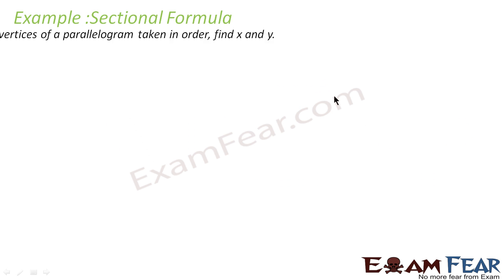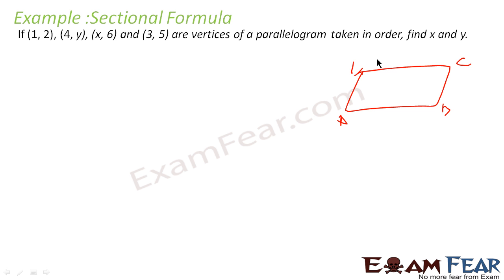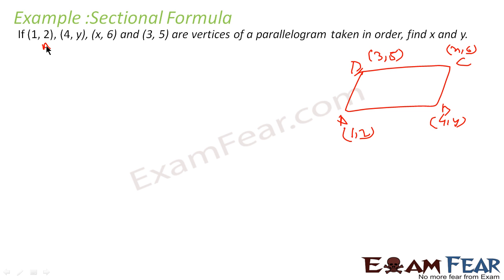For example, the question says: if (1,2), (4,y), (x,6), and (3,5) are vertices of a parallelogram taken in order, we have to find the value of x and y. So let's draw the parallelogram ABCD, where A is (1,2), B is (4,y), C is (x,6), and D is (3,5).